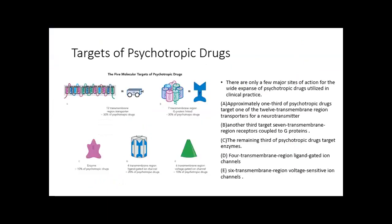Targets of psychotropic drugs. There are only a few major sites of action for the wide expanse of psychotropic drugs utilized in clinical practice. Approximately one-third target one of the twelve transmembrane region transporters for a neurotransmitter. Another third target seven transmembrane receptors coupled to G proteins. The remaining third target enzymes, four transmembrane region ligand-gated ion channels, or six transmembrane region voltage-sensitive ion channels.